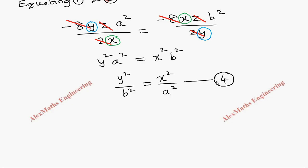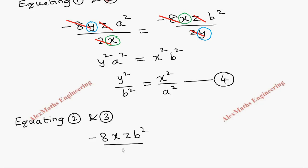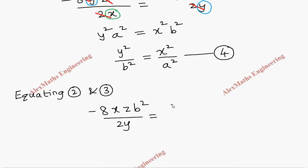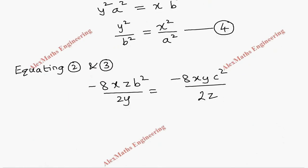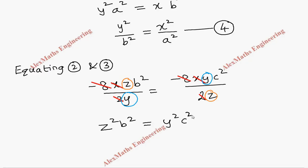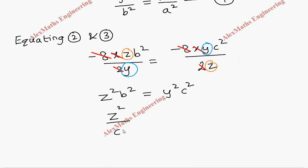Now equating the second and third lambda expressions: −8xz·b²/(2y) = −8xy·c²/(2z). We cancel −8, 2, and x from both sides, then cross multiply: z²b² = y²c². Dividing through gives z²/c² = y²/b². This is our fifth equation.